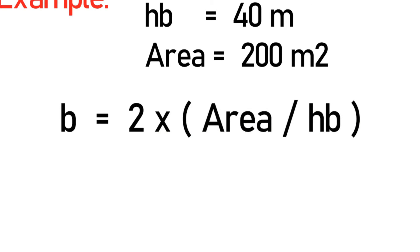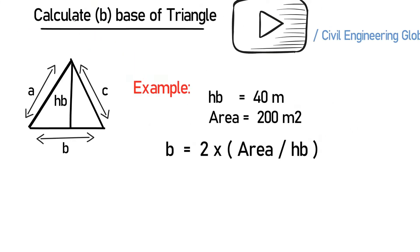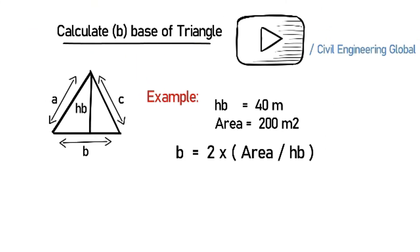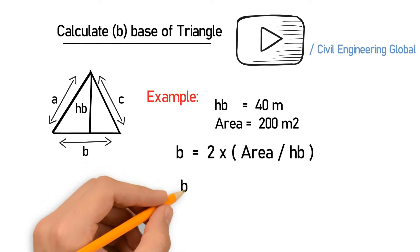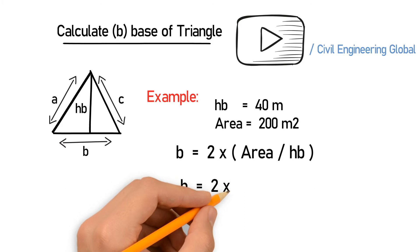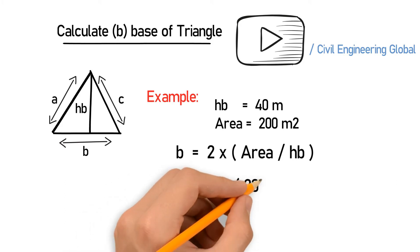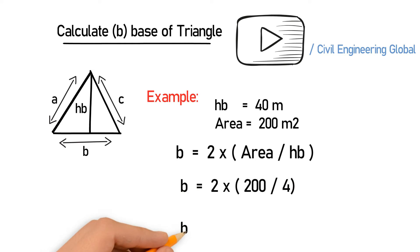B is equal to 2 multiplied by area divided by HB. So after putting the values you will get B is equal to 2 multiplied by 200 divided by 40.